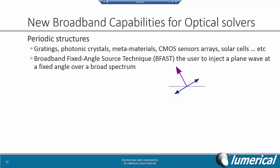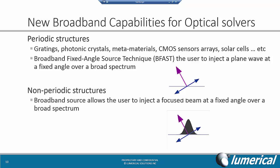For periodic structures such as gratings, photonic crystals, CMOS image arrays, or solar cells, we've introduced a broadband fixed angle source technique, or BFAST, which allows users to inject the plane wave at a fixed angle over a broad spectrum. For non-periodic structures, we've also introduced a broadband beam source, which allows the user to inject a focused beam at a fixed angle over a broadband spectrum. Both techniques make it much more efficient to simulate broadband results compared to before. We'll go over an example for each.